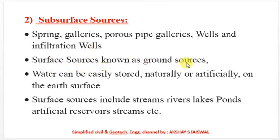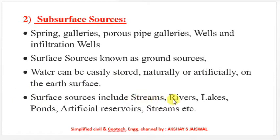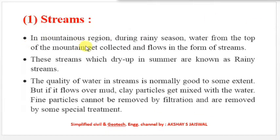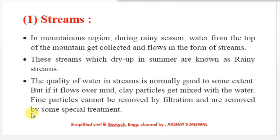Surface sources are also known as ground sources. Water can be easily stored naturally or artificially on the earth's surface. Streams: in mountainous regions during the rainy season, water from the top of mountains gets collected and flows in the form of streams. These streams which dry up in summer are known as rainy streams. The quality of water in streams is normally good, but if it flows over mud, clay particles get mixed with the water. Fine particles cannot be removed by filtration and require special treatment.